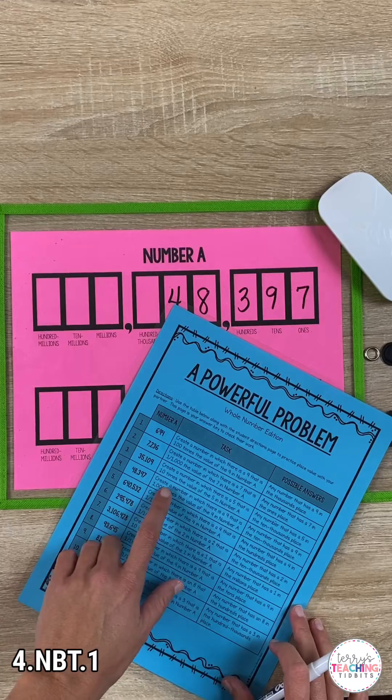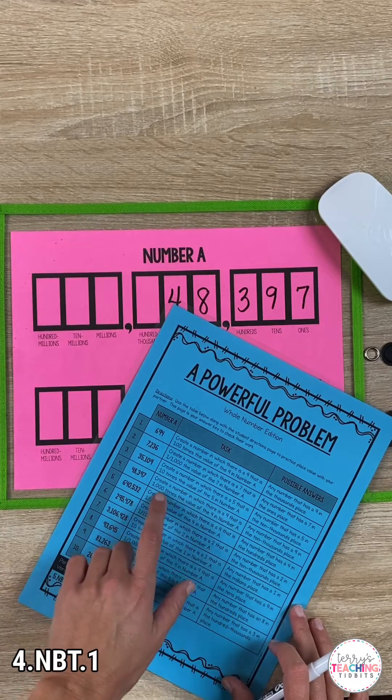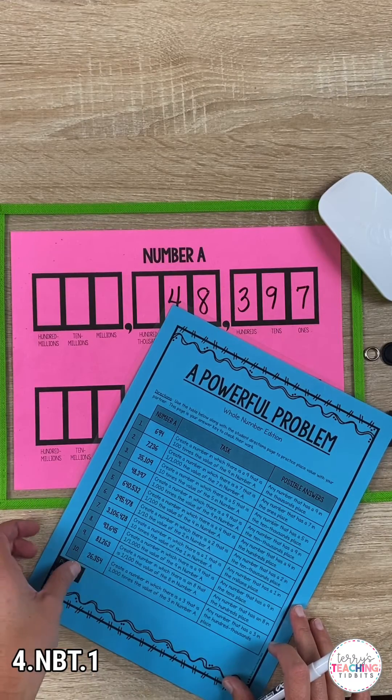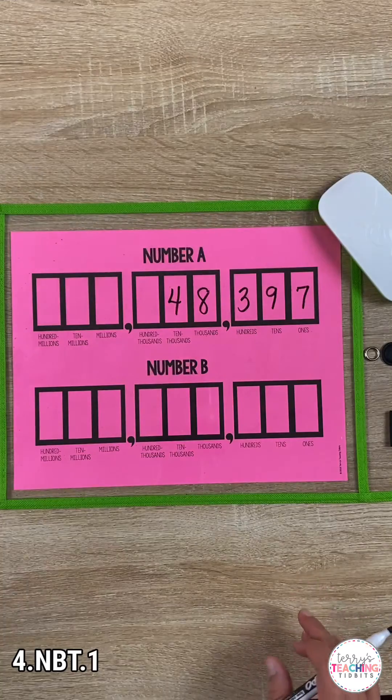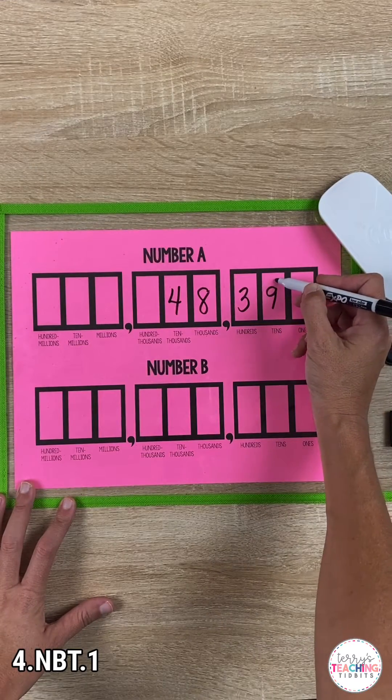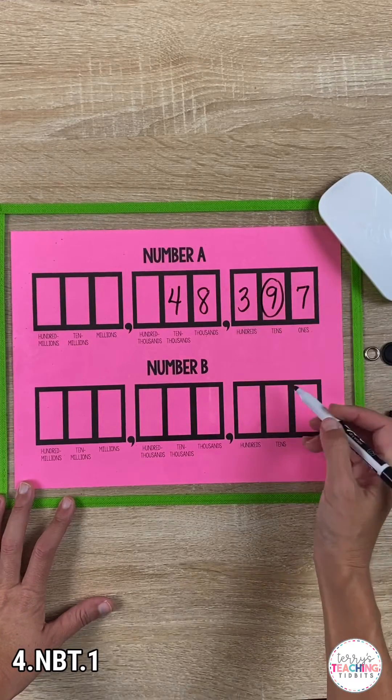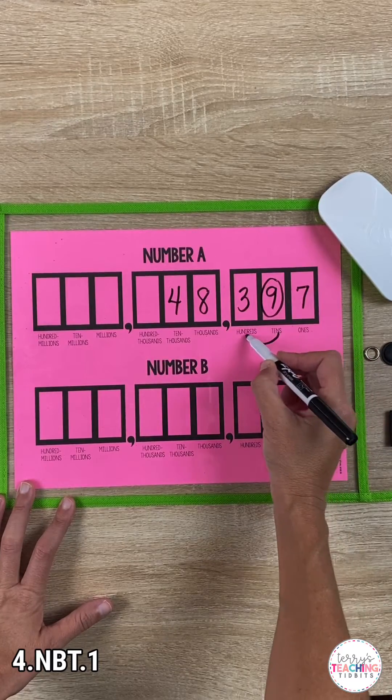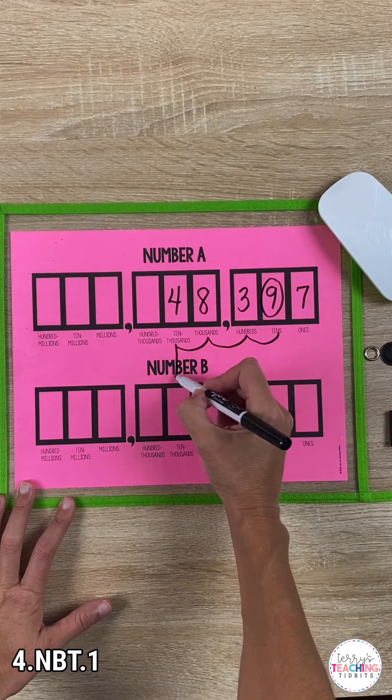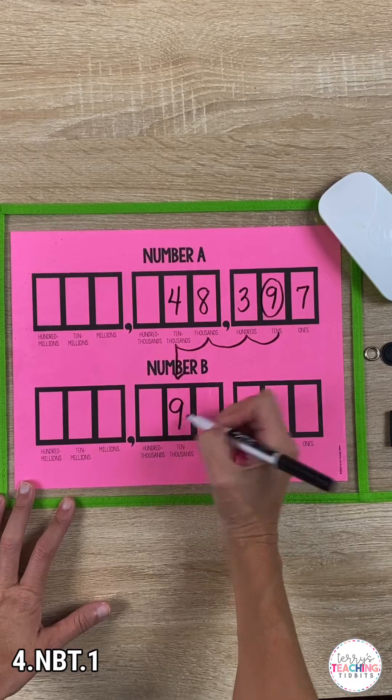The next direction asks them to create a new number in which there's a 9 that is a thousand times the value of the 9 in number A. Have them go back to the 9 in number A, and it's going to move to the left three powers of 10, moving from the tens place to the ten thousands place.